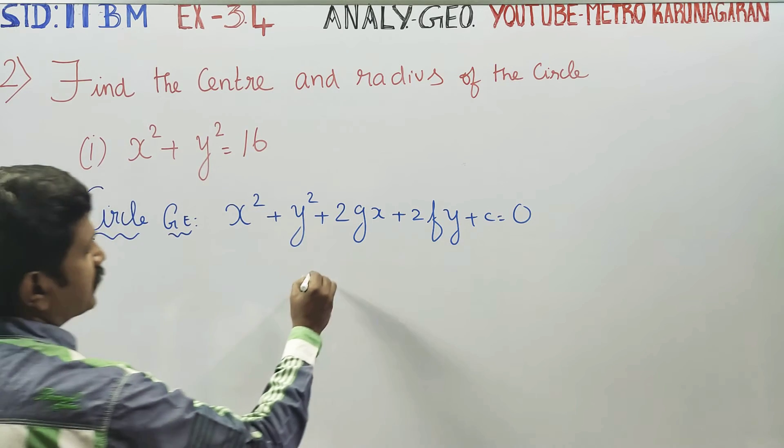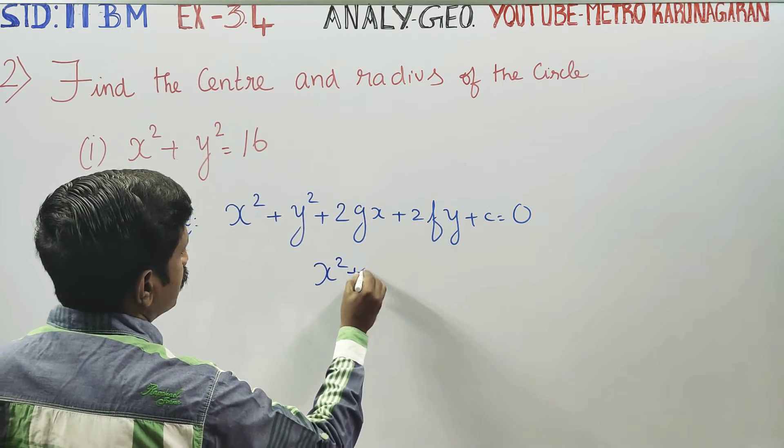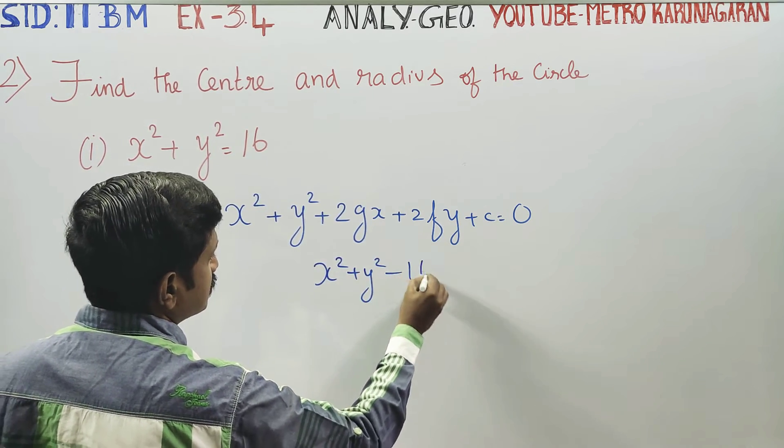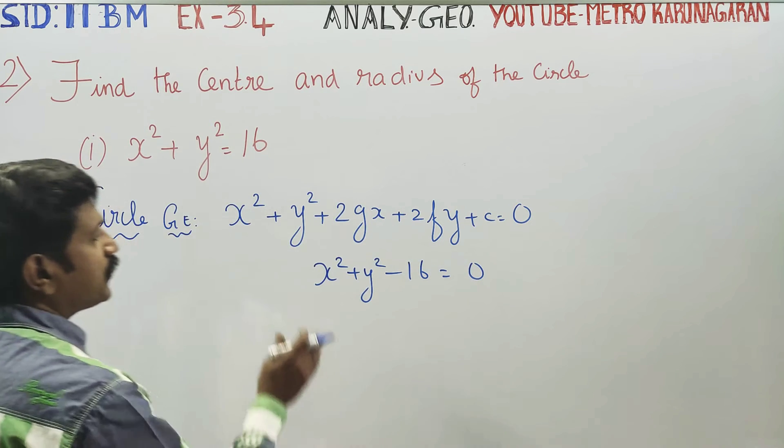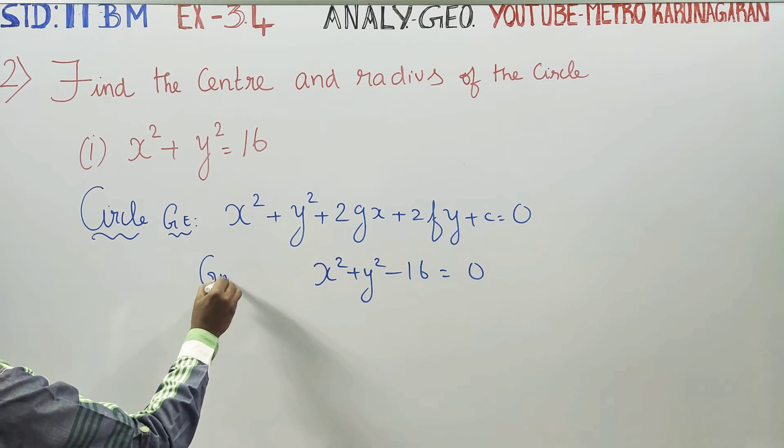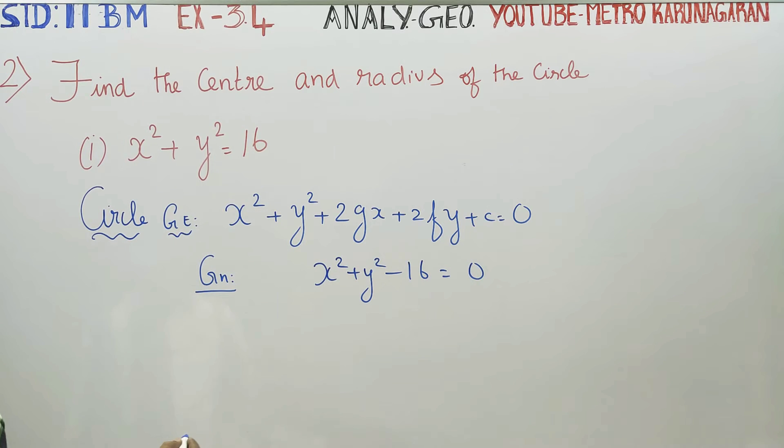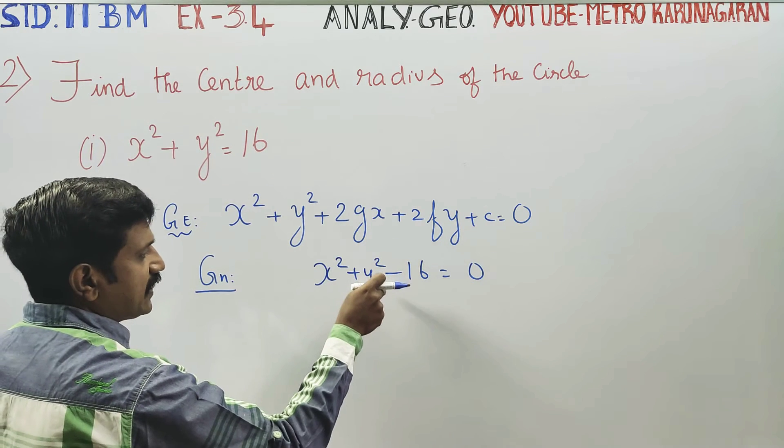This equation is x square plus y square minus 16 is equal to 0. Now, this equation is the given equation. This is general equation. x coefficient is not present.